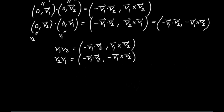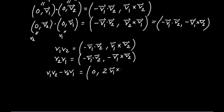We've seen what happens when you add the two equations together. Now let me try subtracting them. On the left-hand side I have V1V2 minus V2V1. On the right-hand side, when I take minus V1 dot V2 and subtract itself, I get zero for the new scalar part.